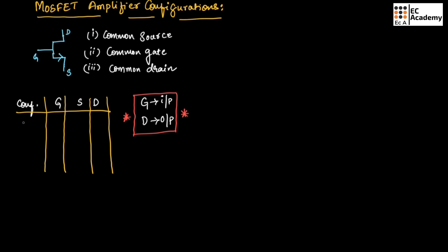In common source configuration, source is connected to ground, which means source is common between input and output. Since gate terminal is preferred as the input terminal, and drain terminal will be the output terminal, gate will be the input side and drain will be the output side.